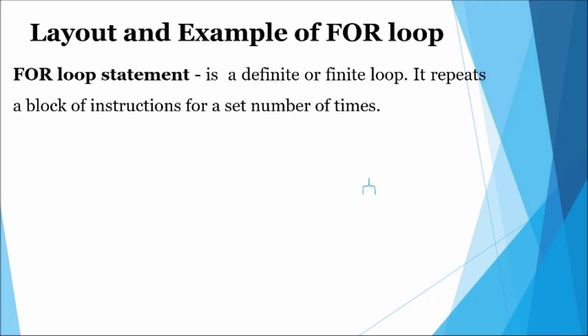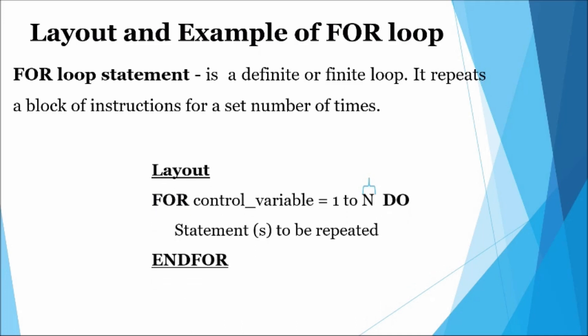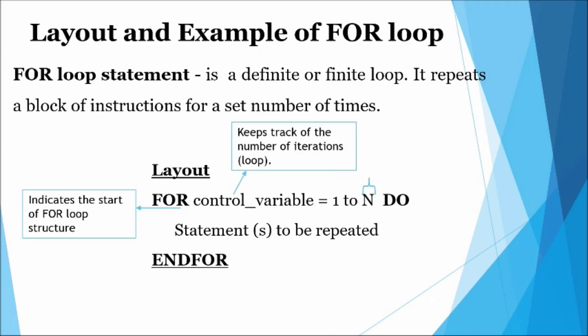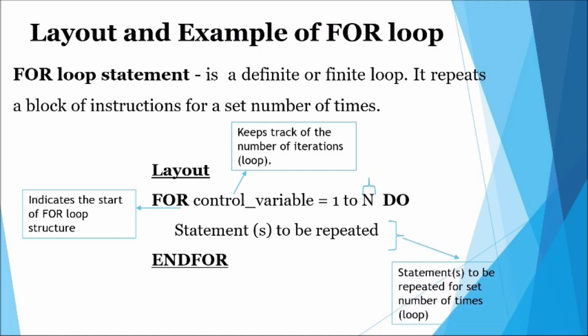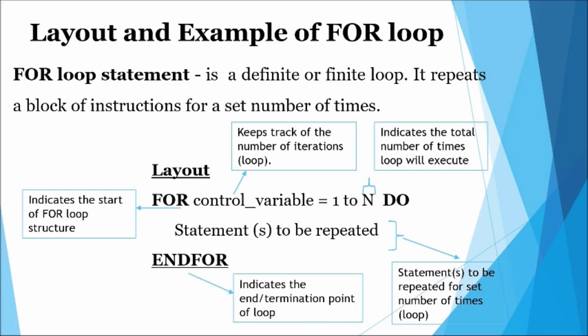For loop statement: a for loop is classified as a definite or finite loop. It repeats a block of instructions for a set number of times. The layout shows the basic structure of a for loop statement. The keyword 'for' indicates the start of the loop structure. The control variable is used to keep track of the number of times the loop will be executed. The number one indicates the starting value and the letter N indicates the total number of iterations. The statements between the 'for' and 'end for' keywords form the loop block or compound statement.